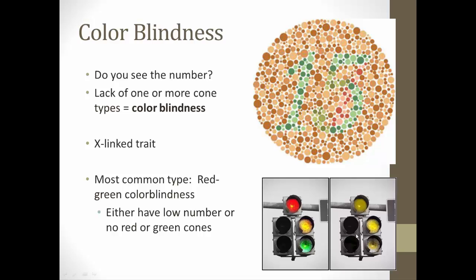Most colorblindness is red-green colorblindness, where people either lack red and green cones or have a low number of them. The image shown gives an idea of what a colorblind person sees. Traffic lights are always ordered red on top, then yellow, then green, so colorblind people can tell whether to stop or go.